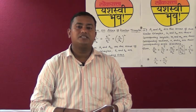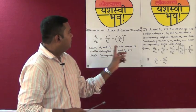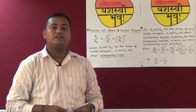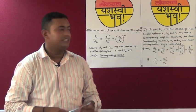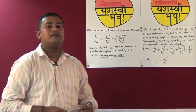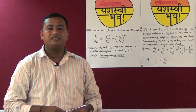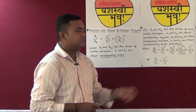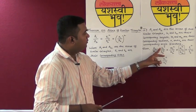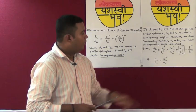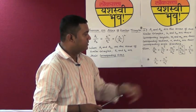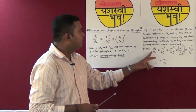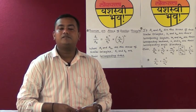Now, a common mistake made by students is: if you write the ratio of areas of two similar triangles is equal to the ratio of the square of corresponding sides, then only you write the name of the theorem as 'theorem on areas of similar triangles.' But if you are writing the ratio of areas is equal to the square of the ratio of heights, medians, or perimeters, then do not give the reason as 'theorem of areas of similar triangles.'